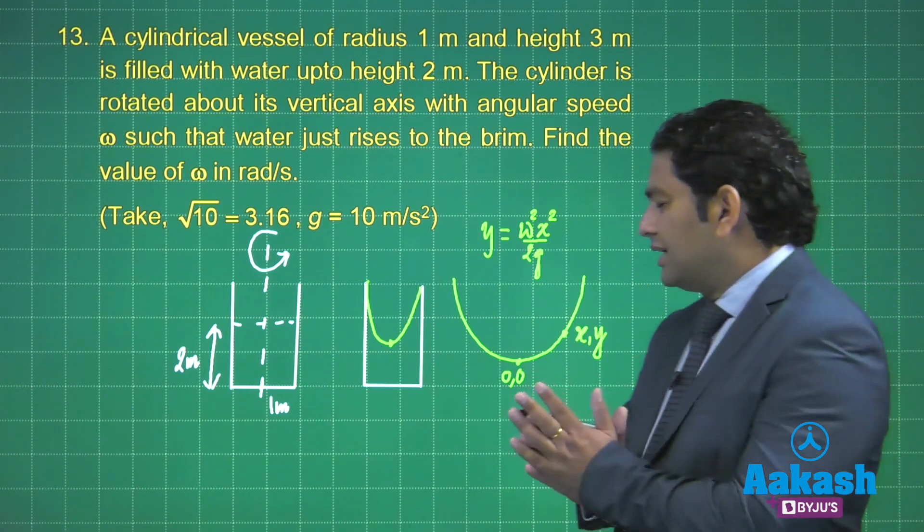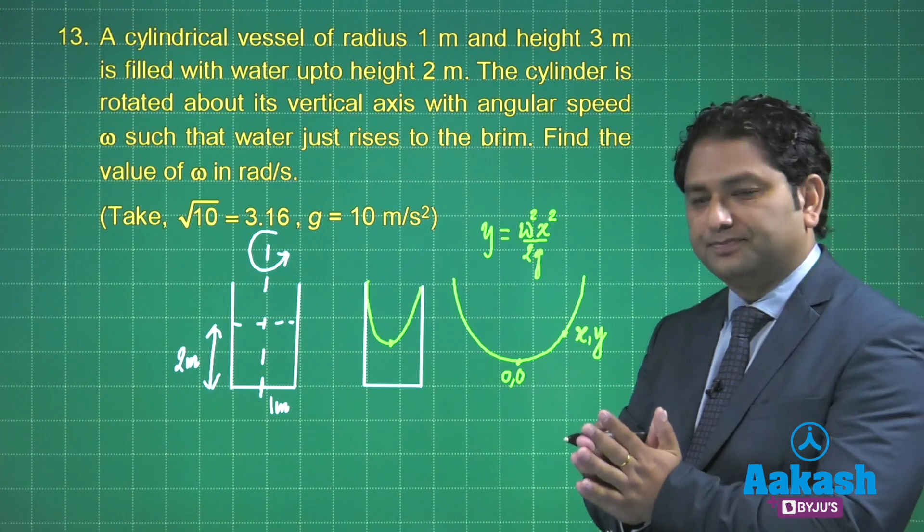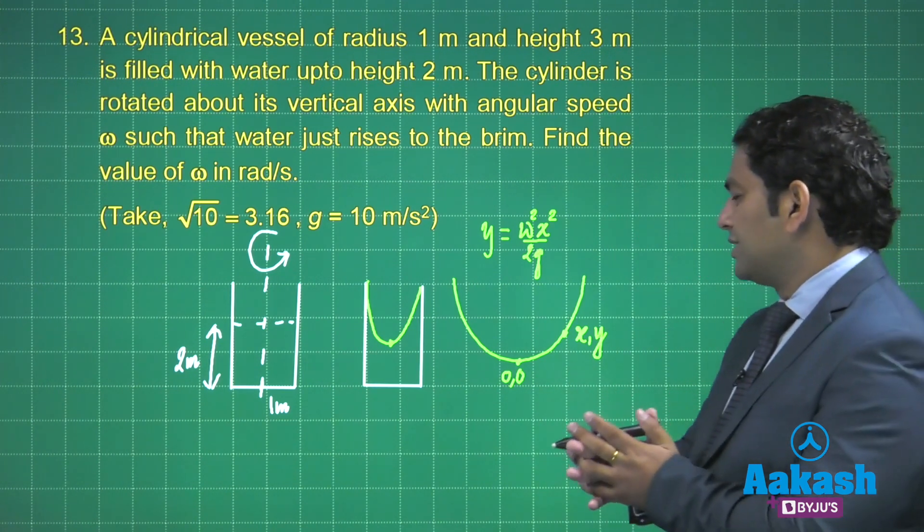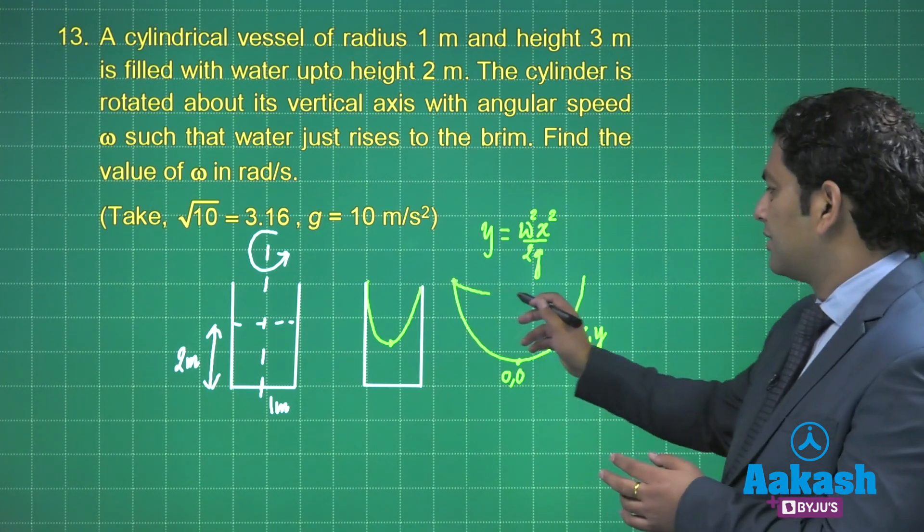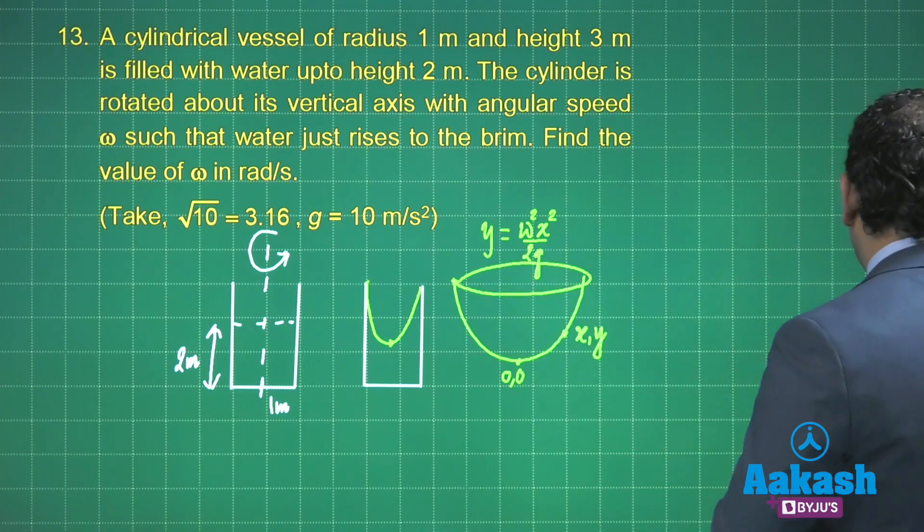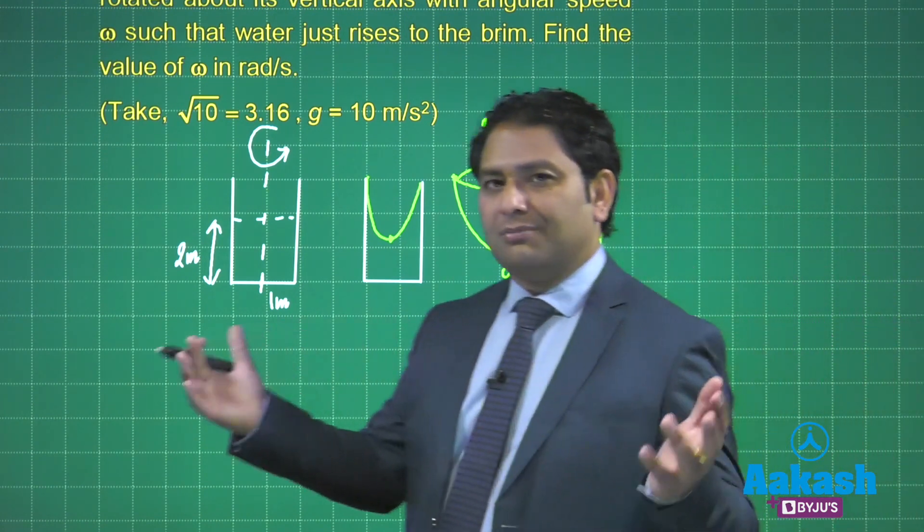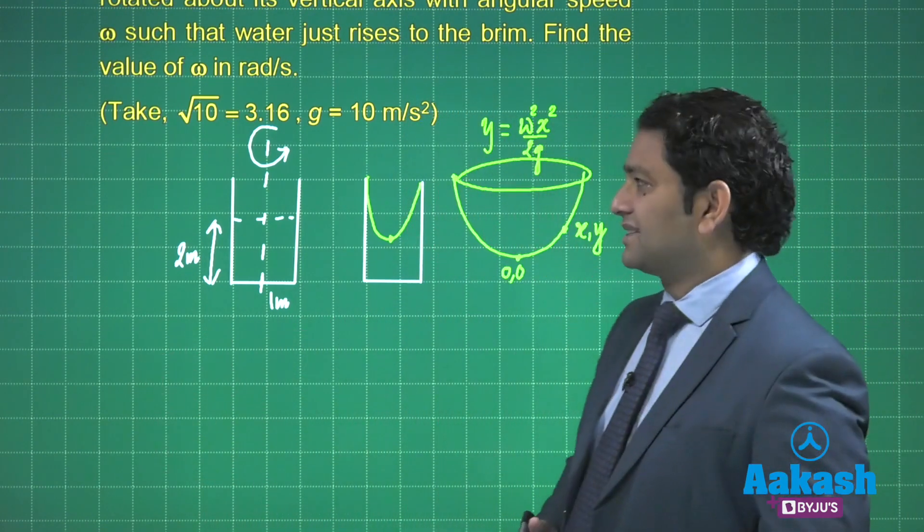Now to calculate the value of ω we need to work a little bit in volume. Let's see how much would be the volume of this paraboloid. It doesn't make sense that someone memorizes the volume of the paraboloid.